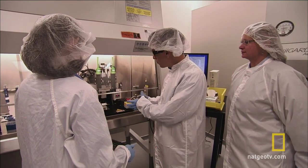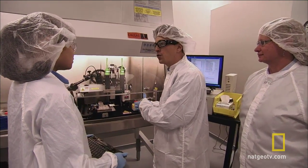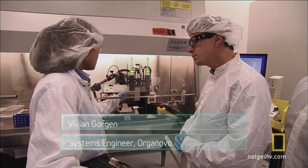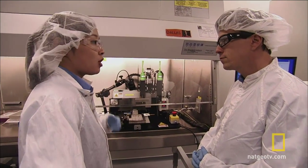Hi Vivian, so we've got the printer here. I see two different cartridges. What's in the cartridges? So if you look at this cartridge here, we actually have liver source cells and in this one here we have cells that make up a lot of supporting material.